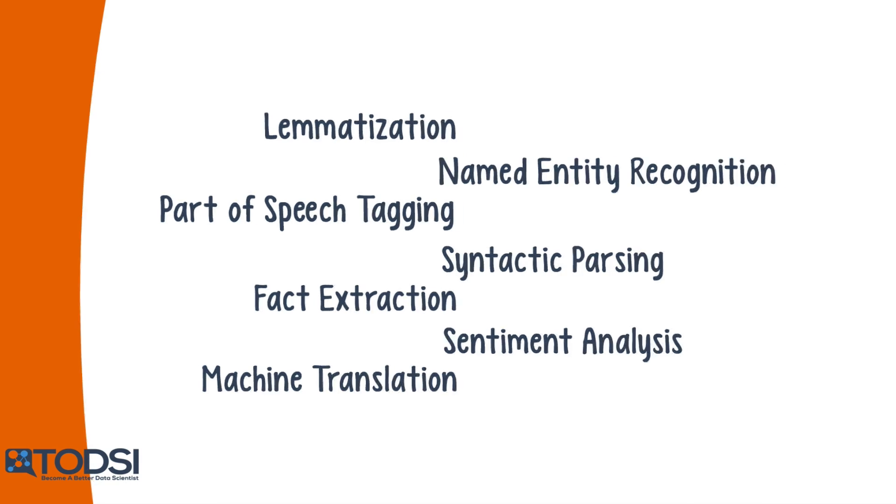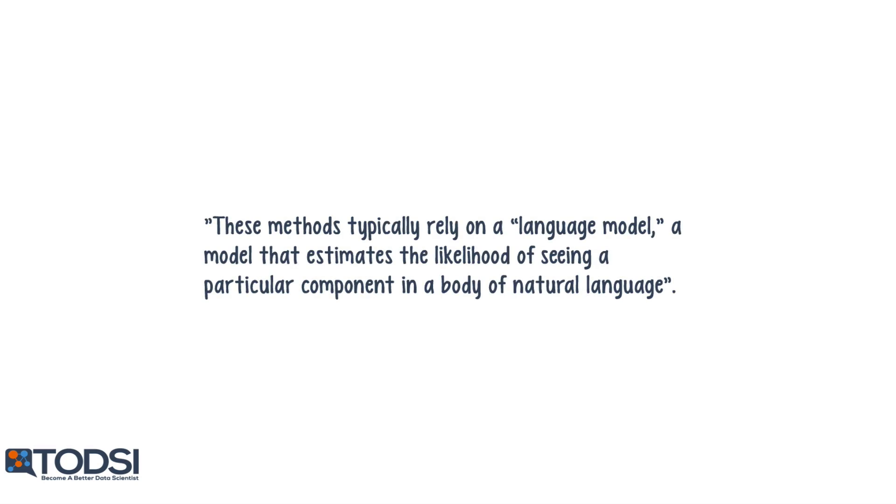These methods typically rely on a language model, a model that estimates the likelihood of seeing a particular component in a body of natural language. One example is the trigram model, which attempts to calculate the probability of seeing a specific sequence of three words in a natural language corpus.